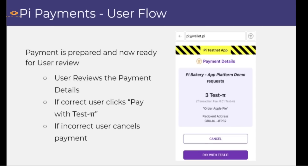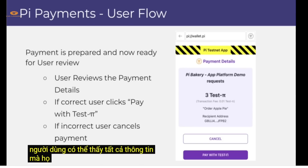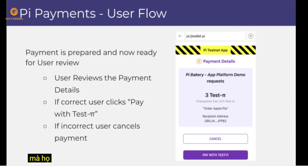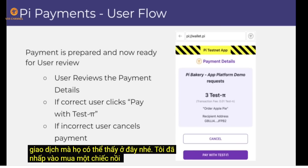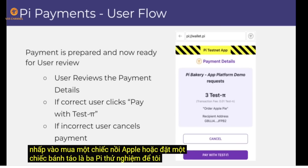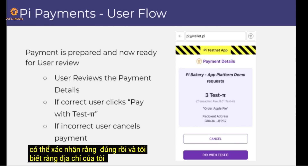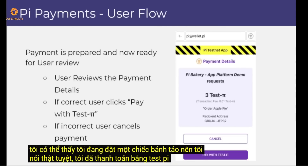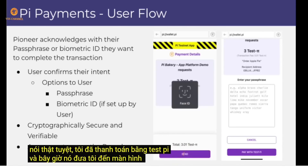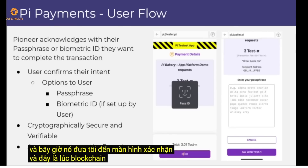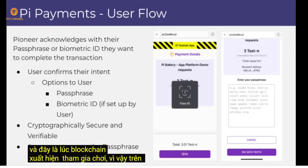Once the payment is built and ready, the user is shown a confirmation screen where they can see all the information going into the transaction — the item, the price (three test Pi for an apple pie), and their wallet address. They confirm everything looks right and click 'Pay with Test Pi.'